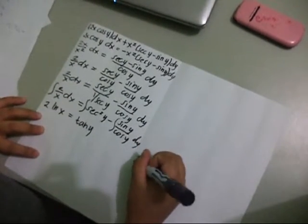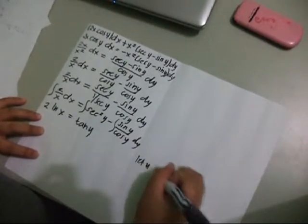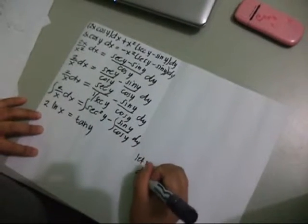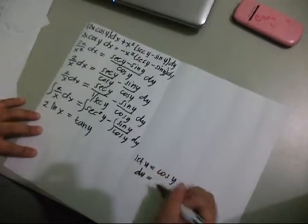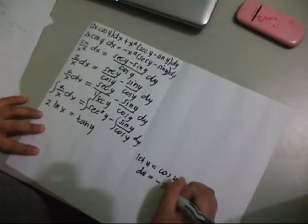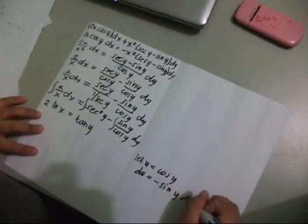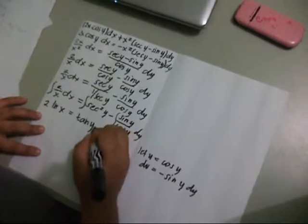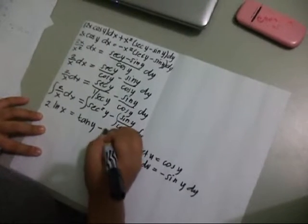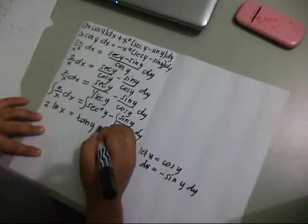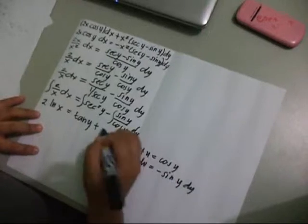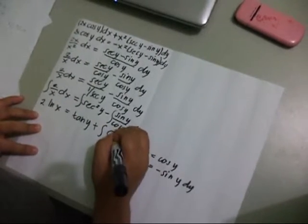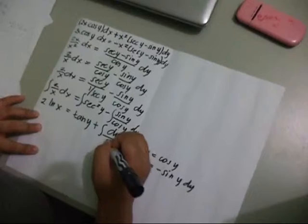Let u equal cosine y. Then du is equal to negative sine y dy. So this integral will become positive — integral of du over u.